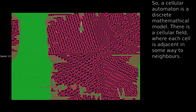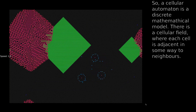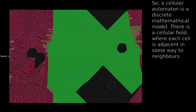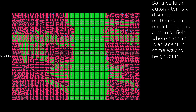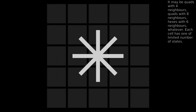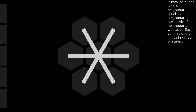A cellular automaton is a discrete mathematical model. There is a cellular field, where each cell is adjacent in some way to neighbors. It may be quads with four neighbors, quads with eight neighbors, hexagons with six neighbors, whatever. Each cell has one of a limited number of states.